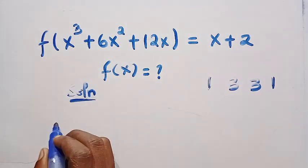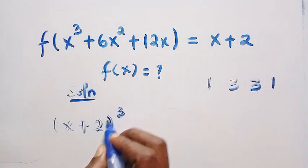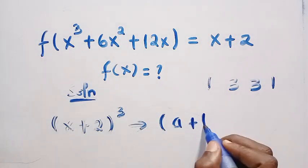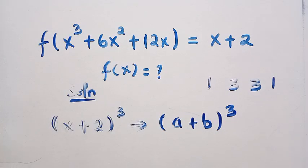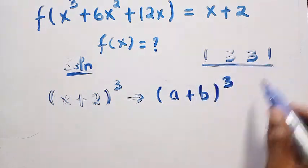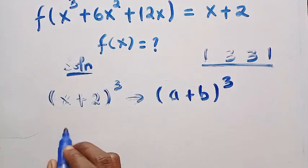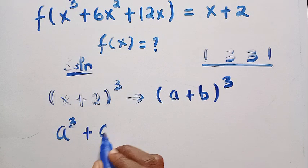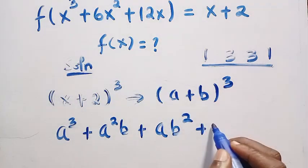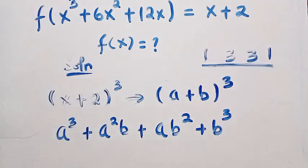It's very simple. Suppose I have x plus 2 raised to power 3. We are going to expand this by comparing it with a plus b raised to power 3. We expand a plus b raised to power 3: when one increases, the other decreases. We get a cubed, then a squared times b, plus a times b squared, then b cubed. This is the expansion of a plus b raised to power 3, and we compare it with x plus 2 raised to power 3.